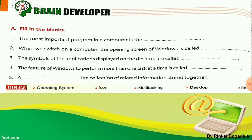Number 1: The most important program in a computer is the dash. Children, which is the most important program in a computer? Yes — operating system. Write down in the first blank: operating system. O-P-E-R-A-T-I-N-G Operating, S-Y-S-T-E-M System. Don't make a spelling mistake, and write with good handwriting.